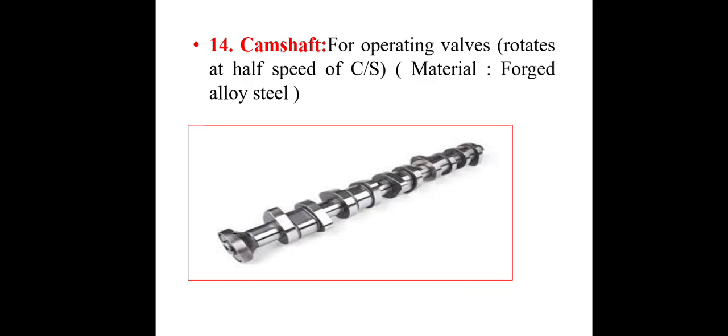The material used for the camshaft is forged alloy steel. There is a cam lobe, and the shape of the cam can be seen in this diagram.